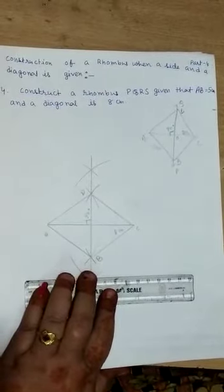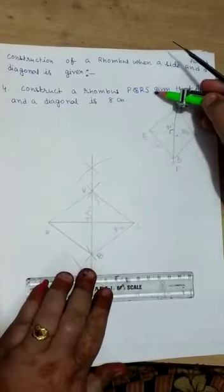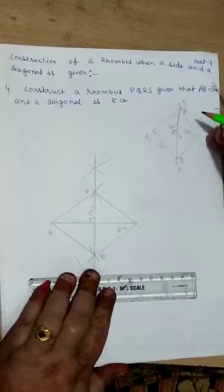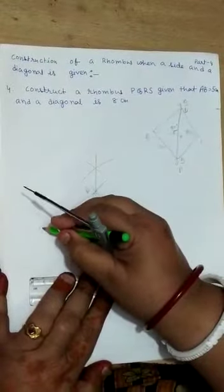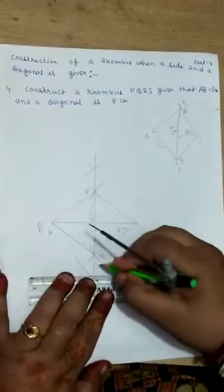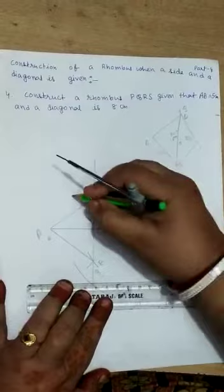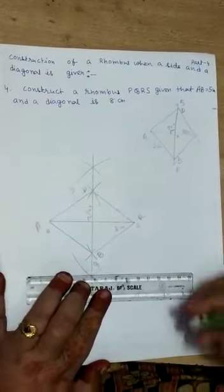Now, here to construct a rhombus PQRS, that means you should write like this: A, P, Q, R, S. No need to write D.